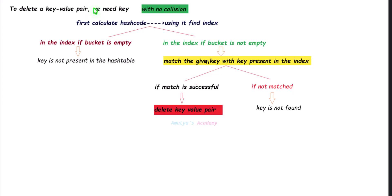To delete a key-value pair when there is no collision, first calculate the hash code and find the index. Then check if the bucket at that index is empty. If the slot is empty, the key is not present in the hash table — return that message. If the bucket is not empty, match the given key with the key present in that slot. If both keys are the same, delete that key-value pair. If they don't match, return 'key not found.'